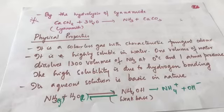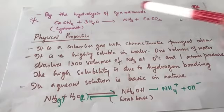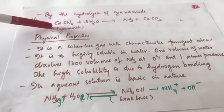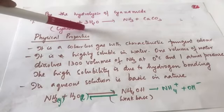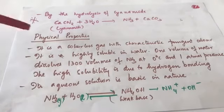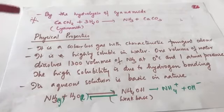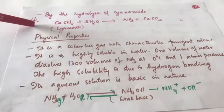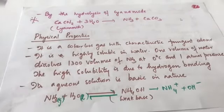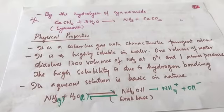Another preparation method for ammonia is the hydrolysis of calcium cyanamide. Calcium cyanamide reacted with water gives ammonia and calcium carbonate. This was mentioned in earlier textbooks and is sometimes asked: 'What gas is produced by the hydrolysis of calcium cyanamide?' The answer is NH3.